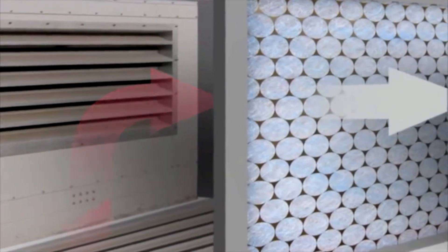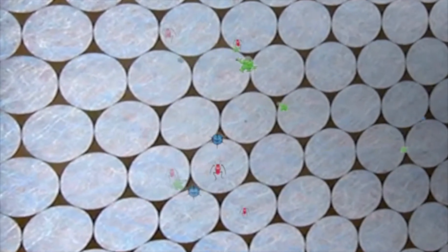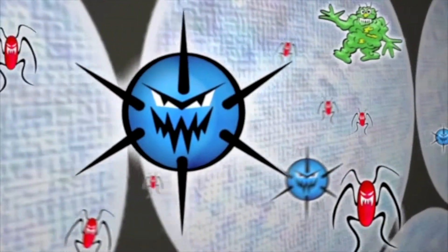The filters trap the big dust, but the smaller items, such as mould, viruses and bacteria, pass straight through the filters into the cooling coils.